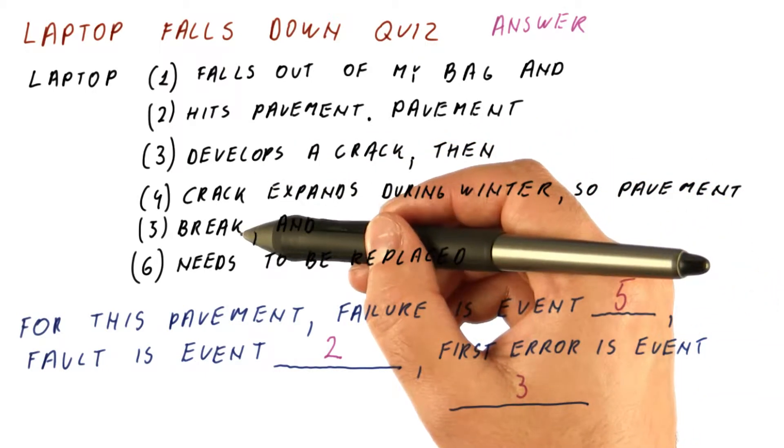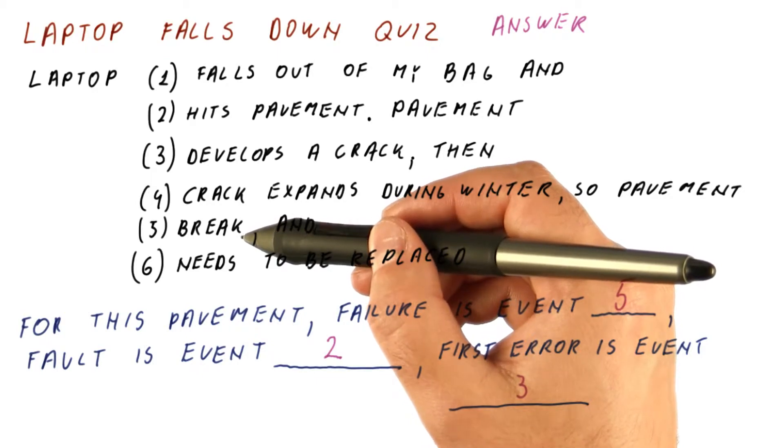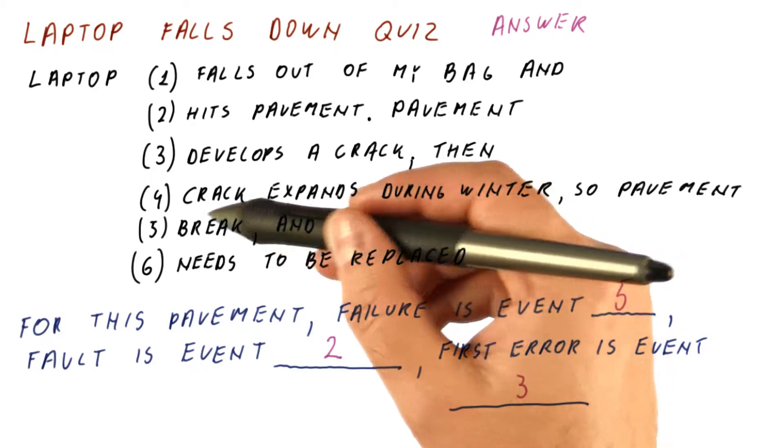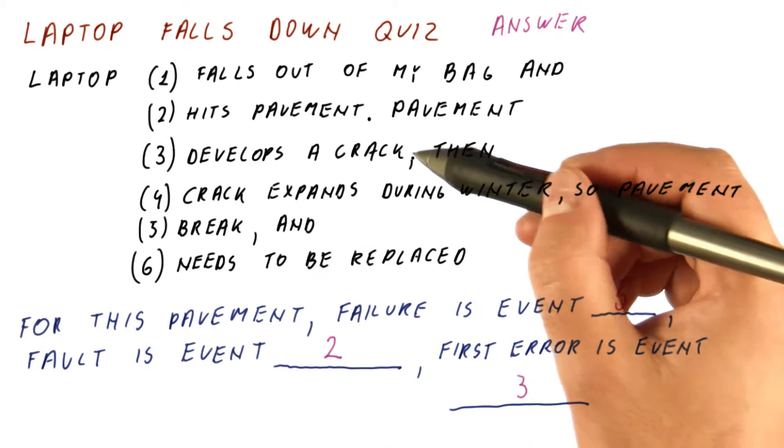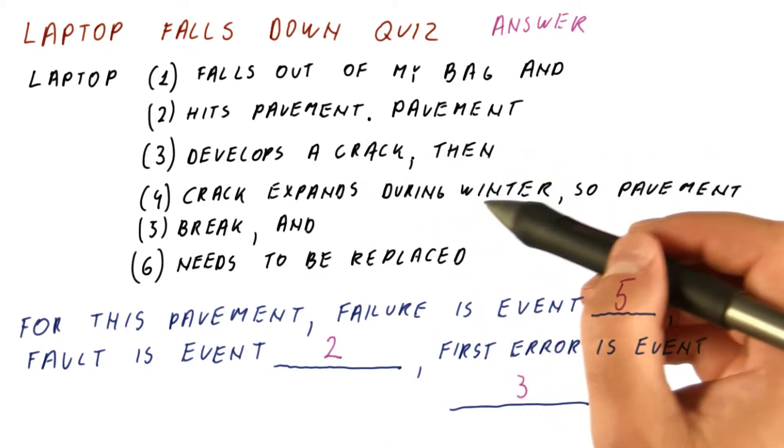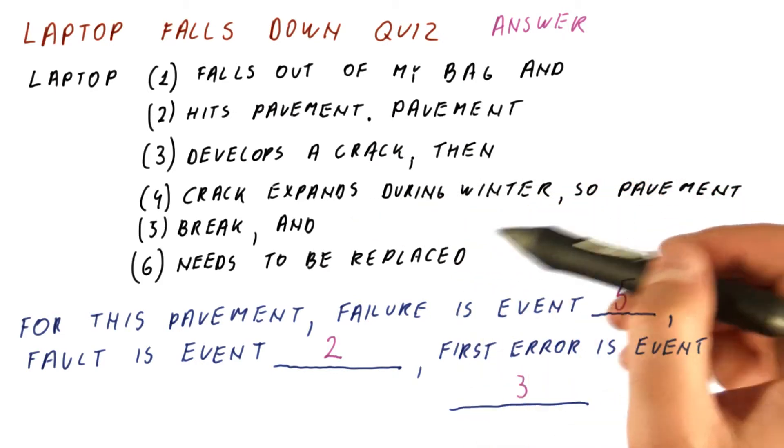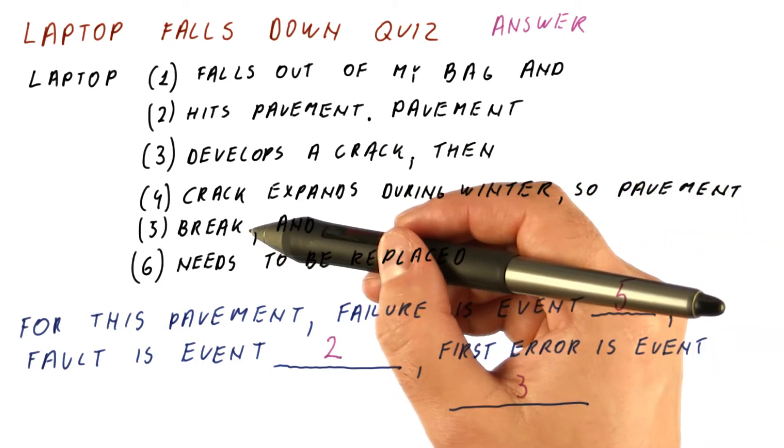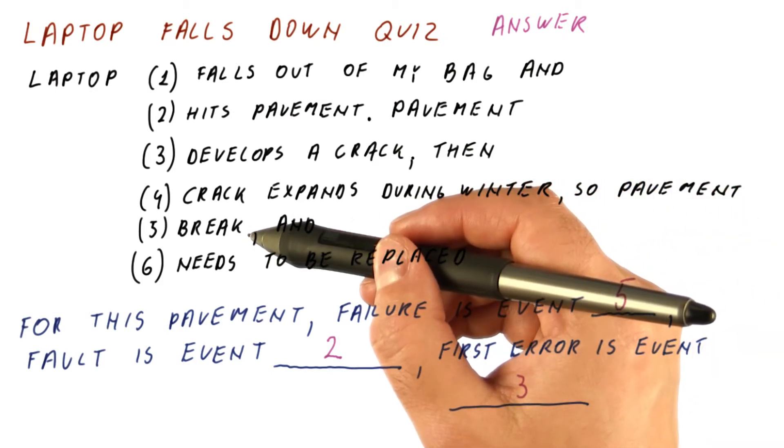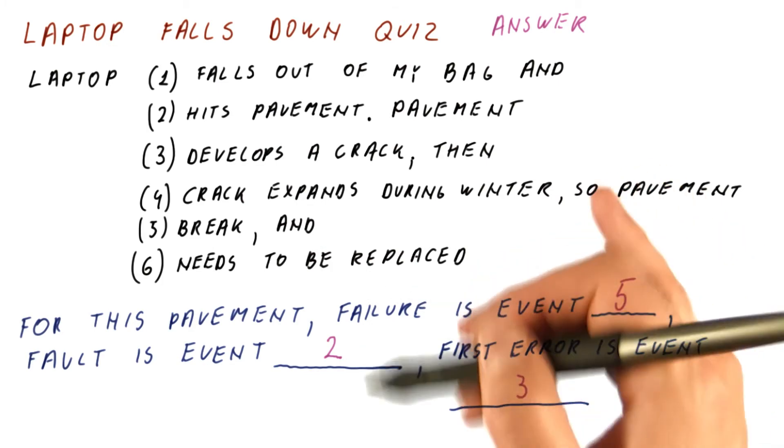But we really notice this in terms of deviating from its specified function when it broke. So we can still use a pavement with a crack. The crack expanded, so the error became bigger. But really, until it broke, the pavement was functioning properly. So this is what we get at the end.